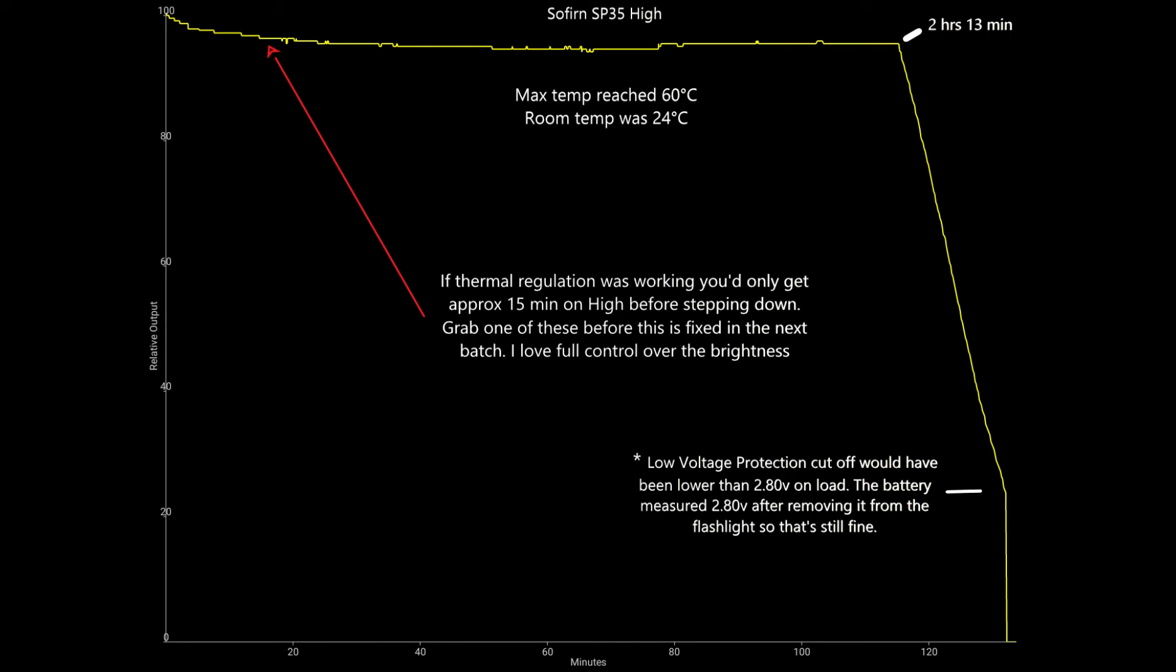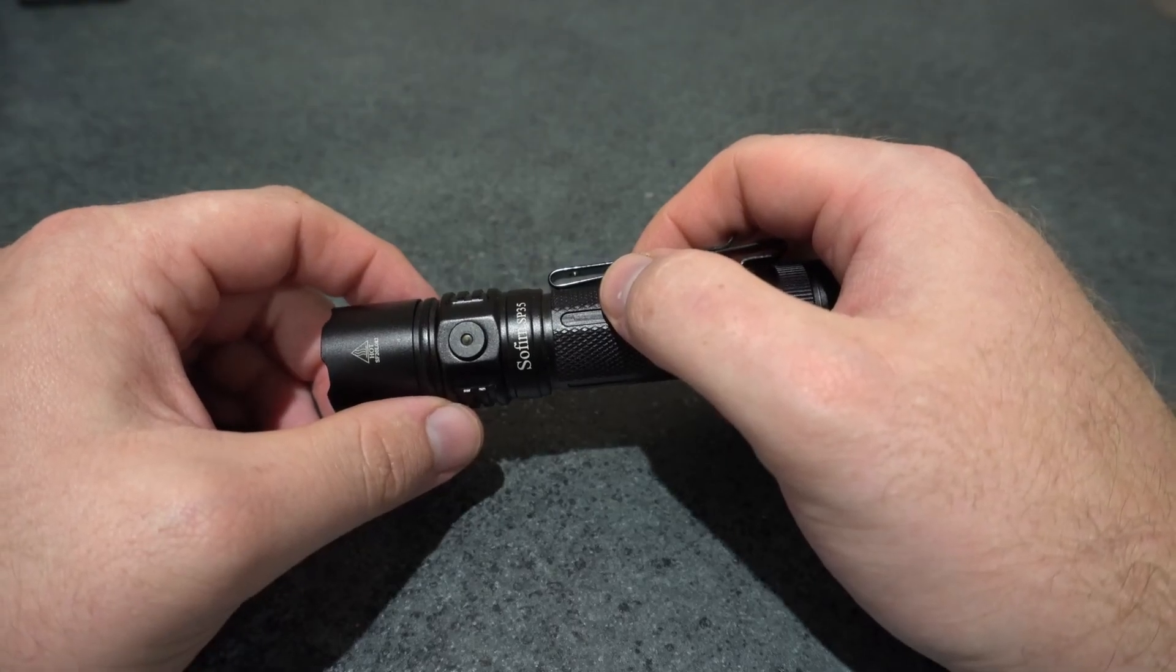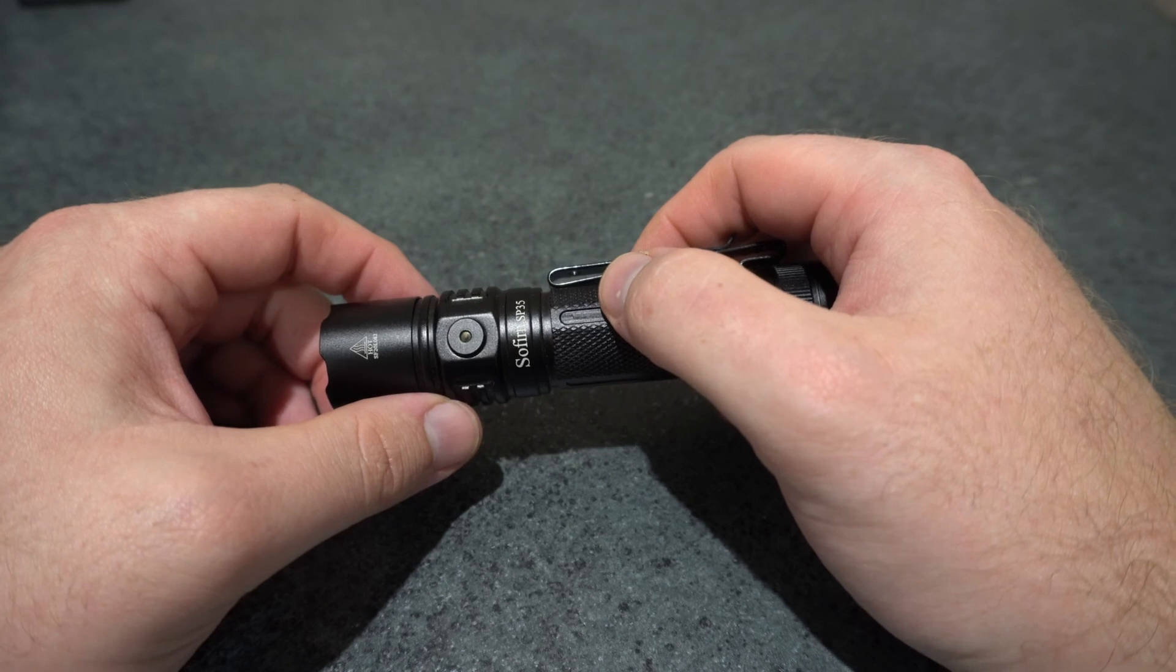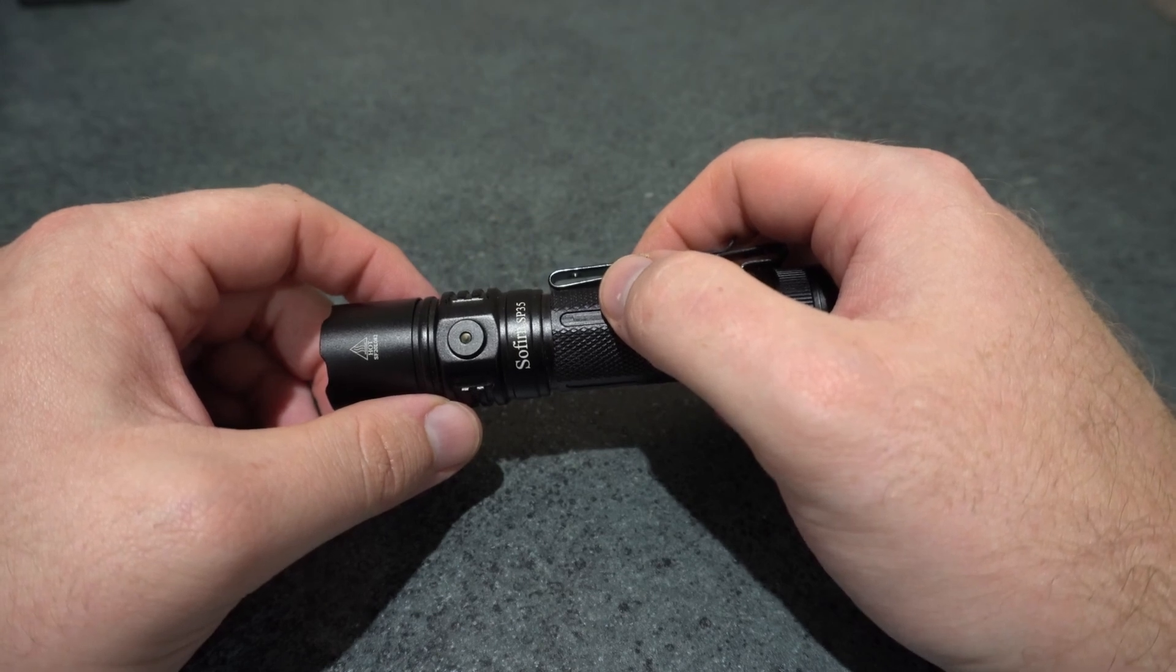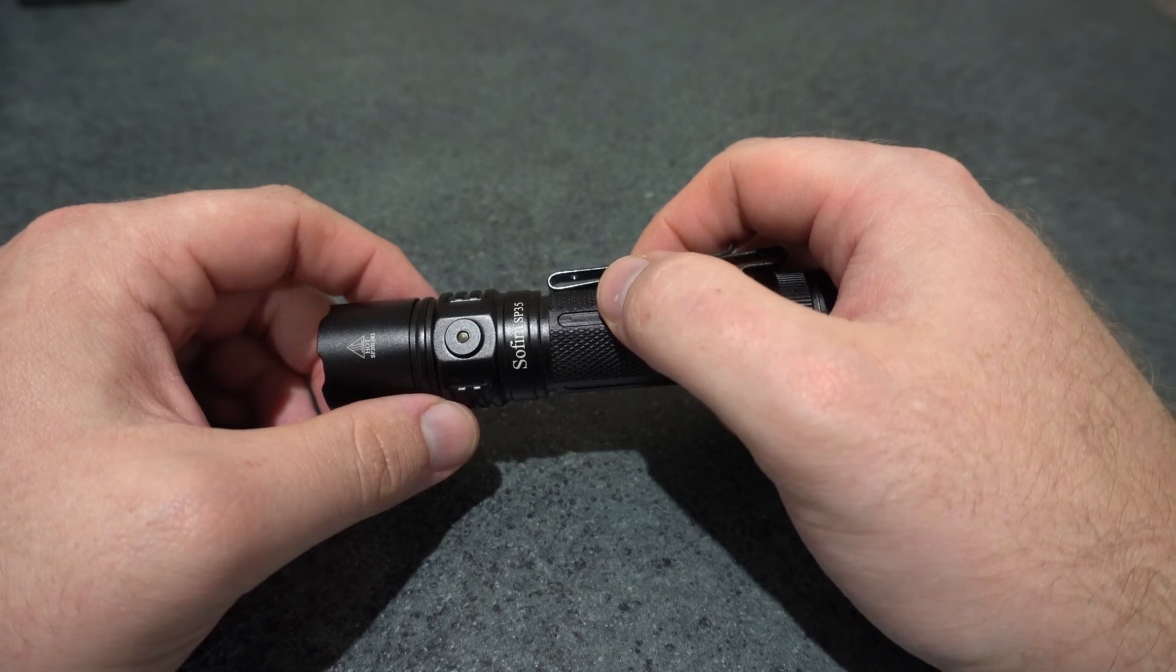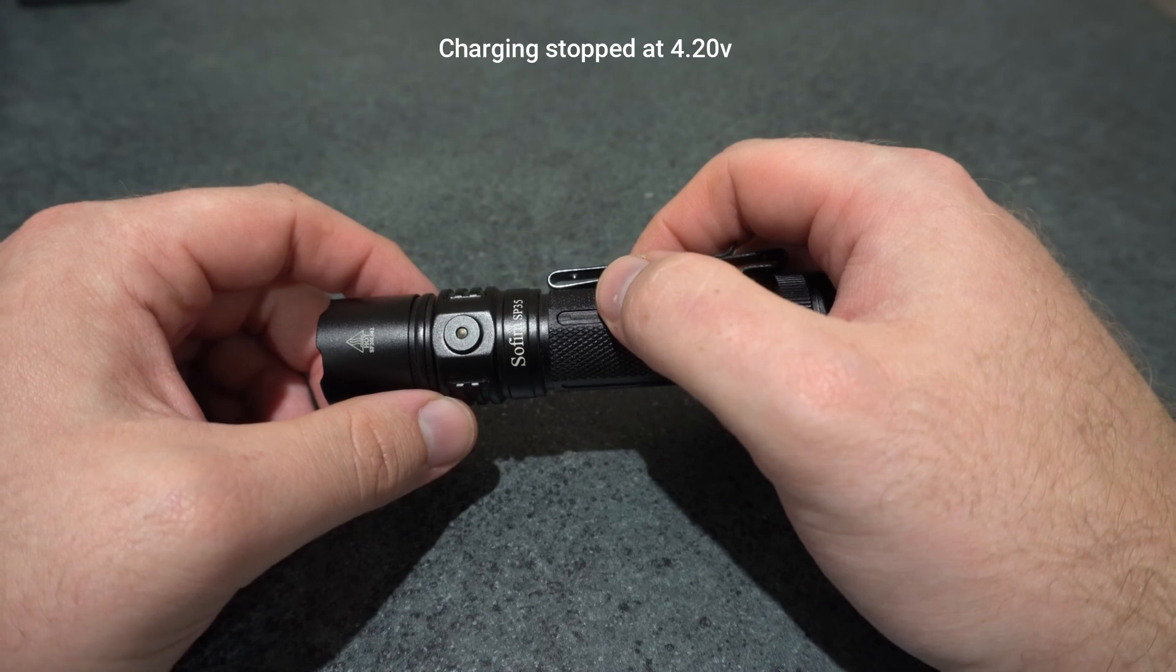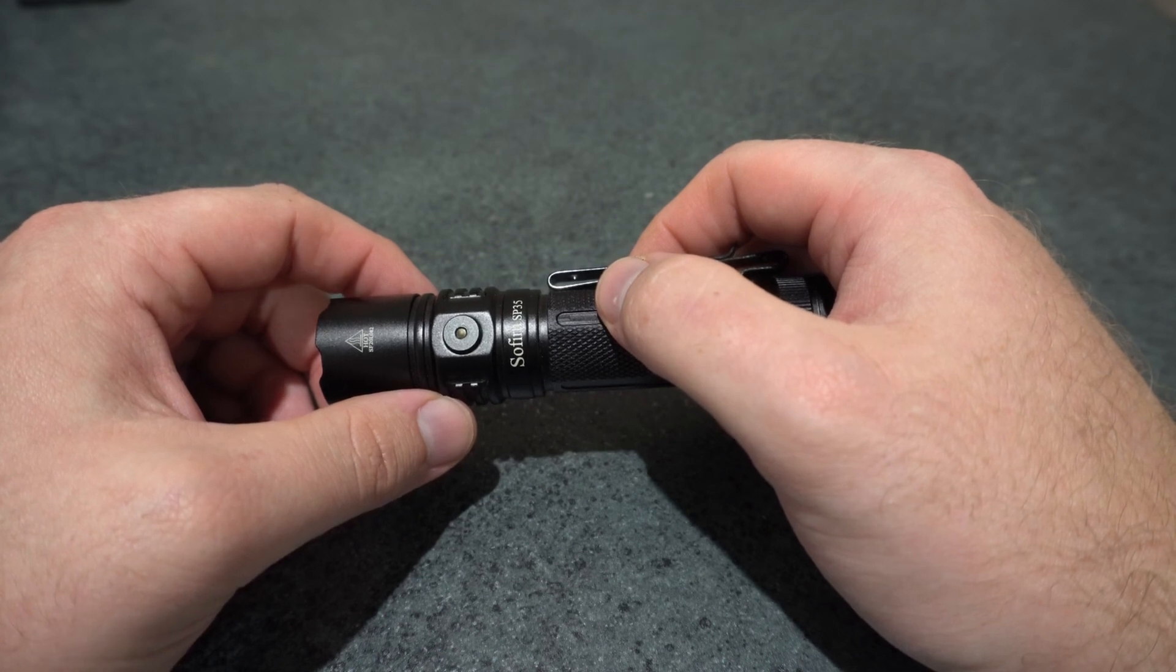I tested the charging current which is in the specs. It says 2 amps, but I measured 1.75 amps, which is good. Full charge cut off on the battery with 4.20 volts. So that's great to see - it's not overcharging the battery.